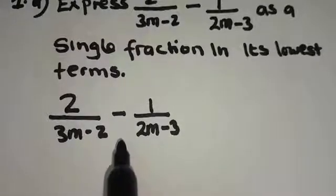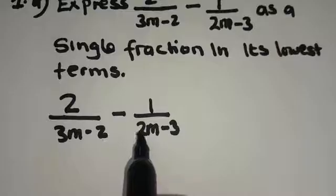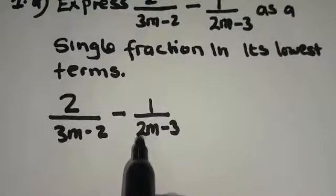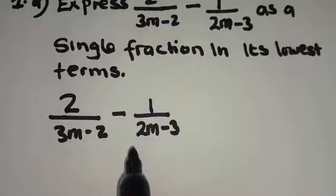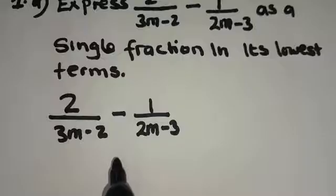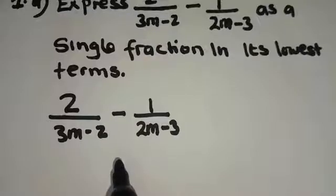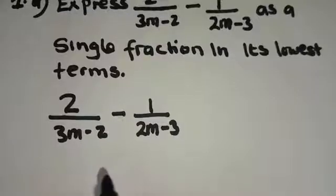What you have to know is that you cannot add or subtract fractions if they have different denominators. So our aim is to make sure that these two fractions have the same denominator — in other words, you need to find the common denominator. We are going to do that by using the concept of equivalent fractions.